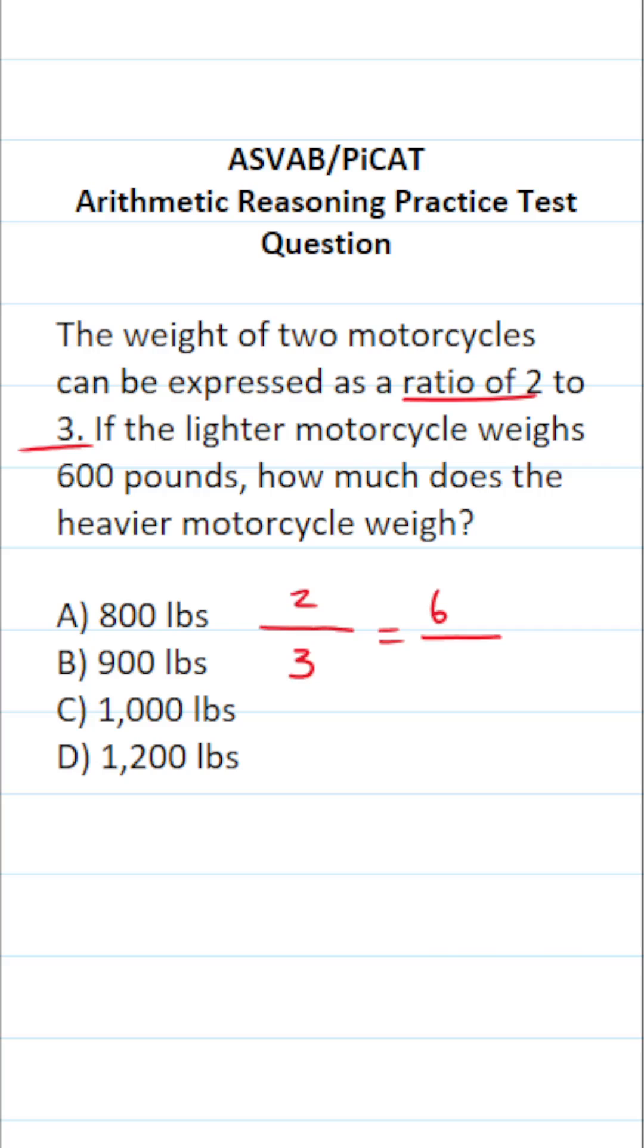So again, the lighter motorcycle is 600 pounds. The weight of the heavier motorcycle is unknown, so we'll represent that with the letter variable X. And of course, you solve proportions using cross-multiplication.